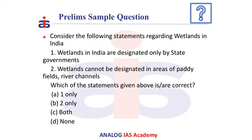Now let us solve this question. Consider the following statements regarding wetlands in India: Statement 1 — wetlands in India are designated only by the state governments; Statement 2 — wetlands cannot be designated in areas of paddy fields or river channels. The correct answer is B — two only.